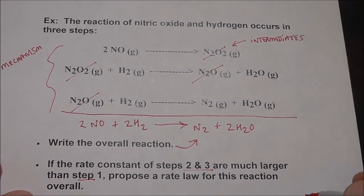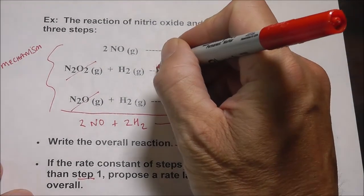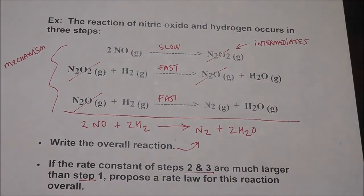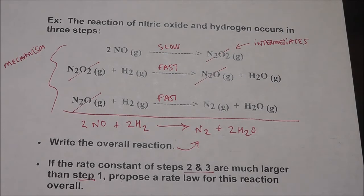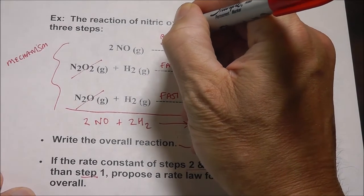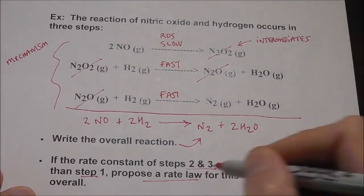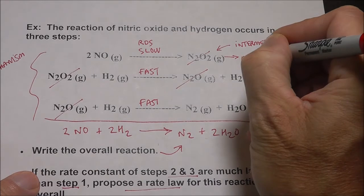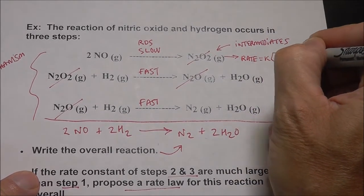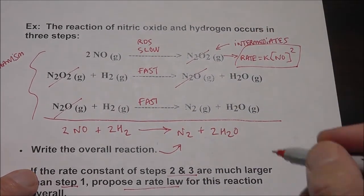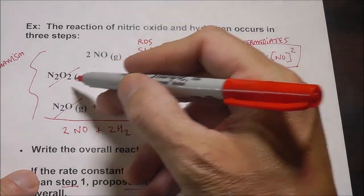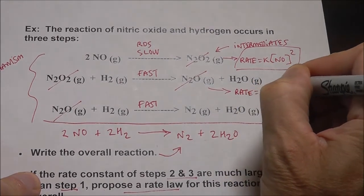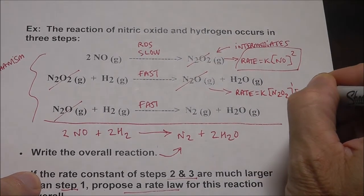The slow step is the RDS, the rate determining step. Propose a rate law for the reaction. What we can do is we can look at this thing and we can say, by looking at it, this is rate equals k times NO squared. That would be that step. This one would be, and I'm looking over here on the left and how many molecules it is, this is unimolecular in N2O2, rate equals k times N2O2 to the first power times H2. That would be the rate law of that step just based on its molecularity. And then this one would be rate equals k times N2O to the first power times H2 to the first power.